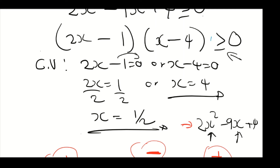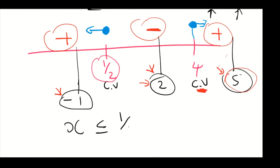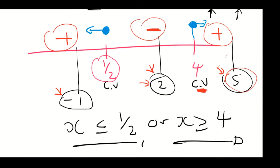We go back to the equation and check the requirement — we want solutions where y is greater than or equal to zero, so we focus on the positive signs. Since it's greater than or equal to zero, we shade the points facing the positive solutions. We can confirm that x must be less than or equal to one half, or x must be greater than or equal to 4. These are your solutions of x.